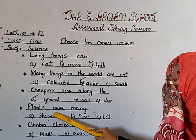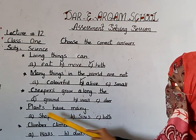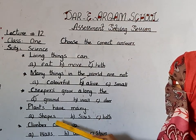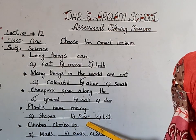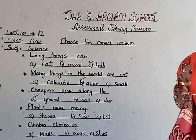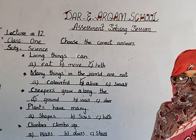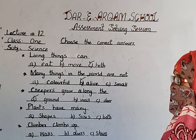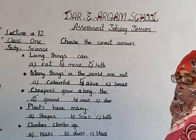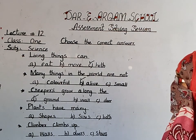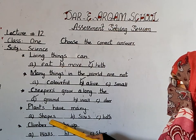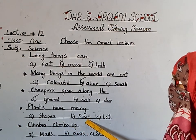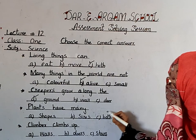Plants have many — shapes, sizes, or both? Students, you have studied in your chapter that plants are different, not the same. Some are small, some are bigger. Their shapes are different and their sizes are also different. So we will tick on 'both'.